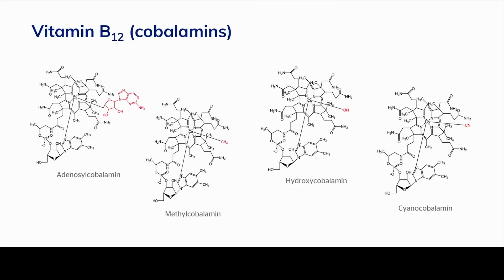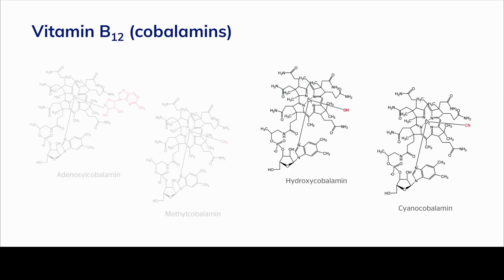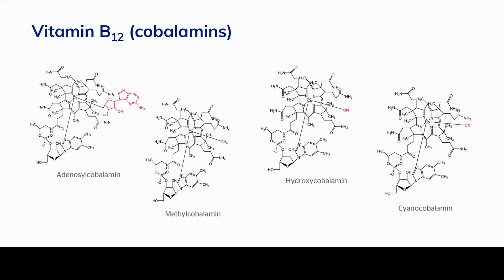Vitamin B12 is a water-soluble micronutrient that exists in several different forms collectively called cobalamins. These compounds contain a cobalt atom at the center of a complex ring system that can accommodate a variety of different ligands shown in red, and it's these ligands or side chains that determine what form the vitamin B12 is in. The two active forms are adenosylcobalamin and methylcobalamin, while hydroxycobalamin and cyanocobalamin are precursors to those active forms.